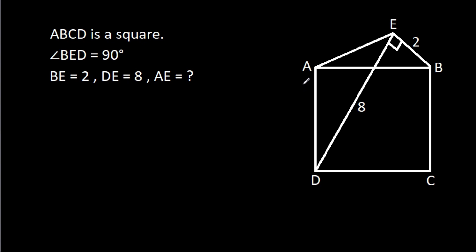In this video, we have been given that ABCD is a square, angle BED is 90 degrees, BE is 2, DE is 8, and we have to find AE.